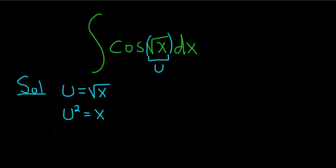Then we can take the derivative. So on the left-hand side, we'll get 2u du. And on the right-hand side, we just get 1dx or just dx.